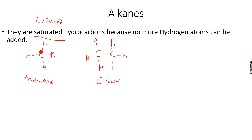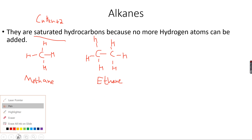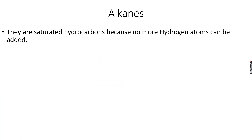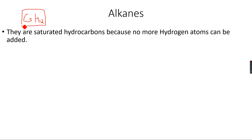Now we know how to make alkanes and we know the general formula. Let's talk about the isomerism of alkanes. Let's take an alkane with 5 carbon atoms, so this will become C5H12 — this is pentane. Now let's make isomers for alkanes with this molecular formula.